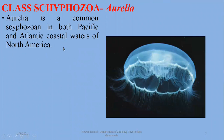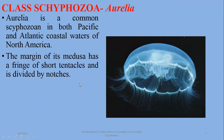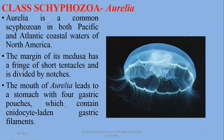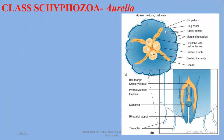Aurelia is a common scyphozoan found in both Pacific and Atlantic coastal waters of North America — a common jellyfish. The margin of its medusa has a fringe of short tentacles and is divided by notches — inward invaginations. The mouth of Aurelia leads to the stomach with four gastric pouches, which contain nematocysts and gastric filaments. You can see the four gastric pouches here, and the oral lobes with tentacles are quite prominent.